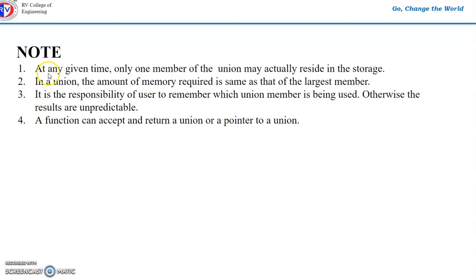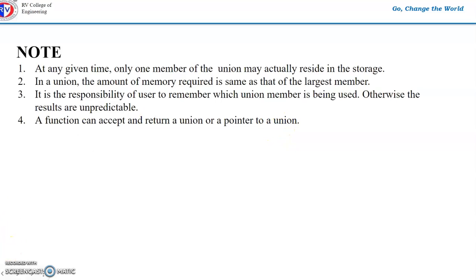In summary: at any given time, only one member of a union may actually reside in the storage. The amount of memory required by a union is the same as that of its largest member plus some slack bytes. It is the responsibility of the user to remember which union member is being used; otherwise, results will be unpredictable. A function can accept and return a union or a pointer to a union, as in a structure. Thank you.